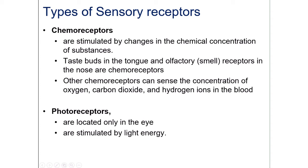To quickly recap: mechanoreceptors are stimulated by changes in pressure or movements, nociceptors register pain, and thermoreceptors detect temperature. Two more types to cover — chemoreceptors, which we learned about in lecture 4 in the context of respiratory centers detecting carbon dioxide and the carotid body detecting oxygen content in blood. Chemoreceptors detect a particular chemical concentration, and you will also find them in taste buds, where they detect things like glucose for sweetness and sodium for saltiness, as well as in the nose for smell.